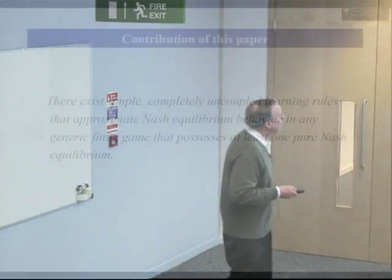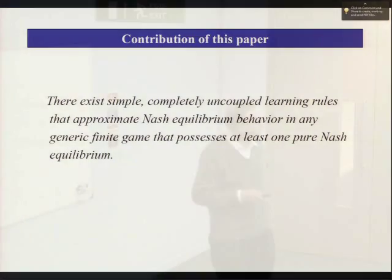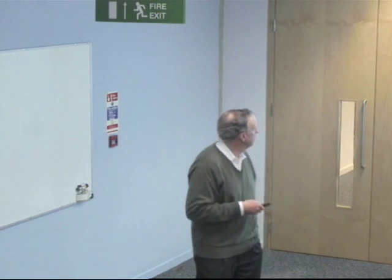I claim that there are simple, completely uncoupled learning procedures that approximate Nash equilibrium behavior in any n-person generic finite game, so long as it possesses at least one pure equilibrium. That's the talk. Everything to follow will simply be the details of how you construct these rules — a whole family of procedures that works.